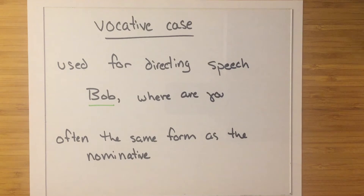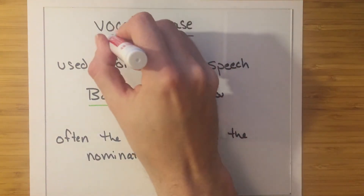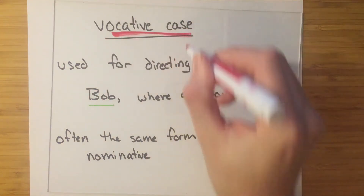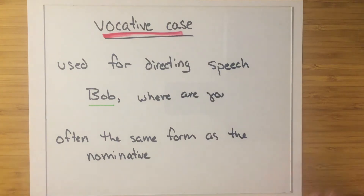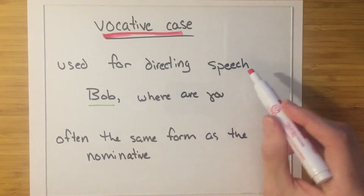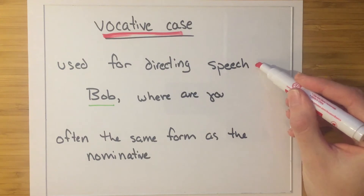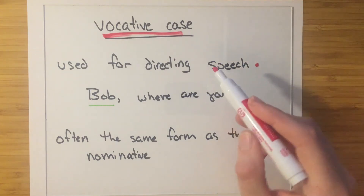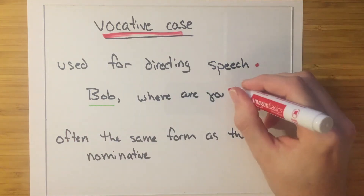Hello and welcome to Aurelian University. In this video we want to talk about the vocative case. The vocative case is used for directing speech towards somebody. So here we have 'Bob, where are you?'